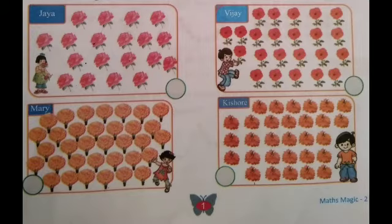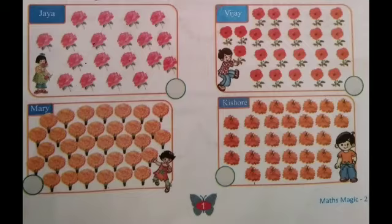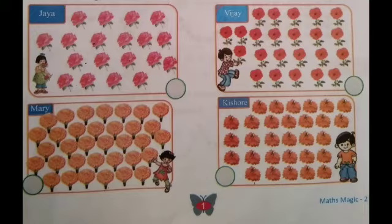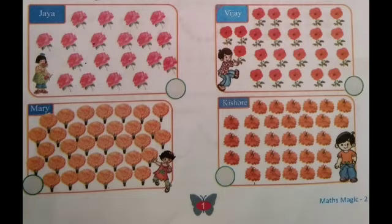Vijay. 12, 13, 14, 15, 16, 17, 18, 19, 20, 21, 22, 23, 24, 25, 26, 27, 28, 29, 30, 31, 32, 33, 34. 34 flowers.